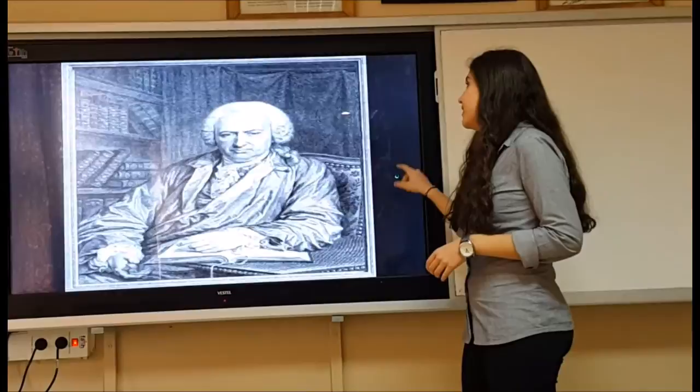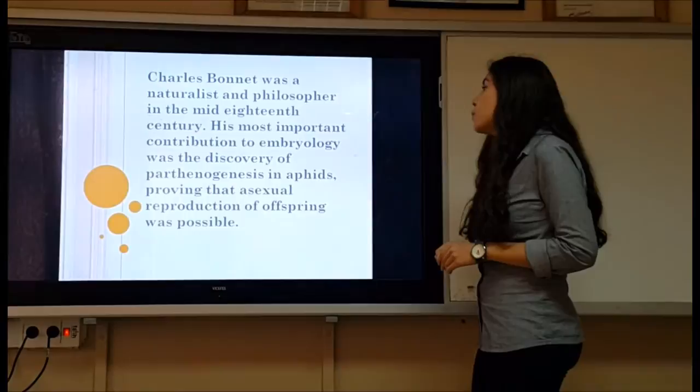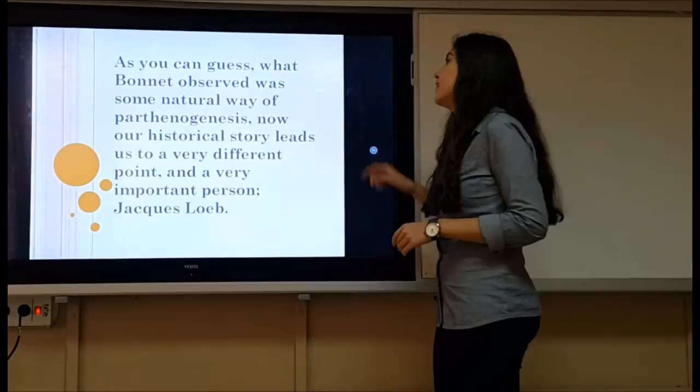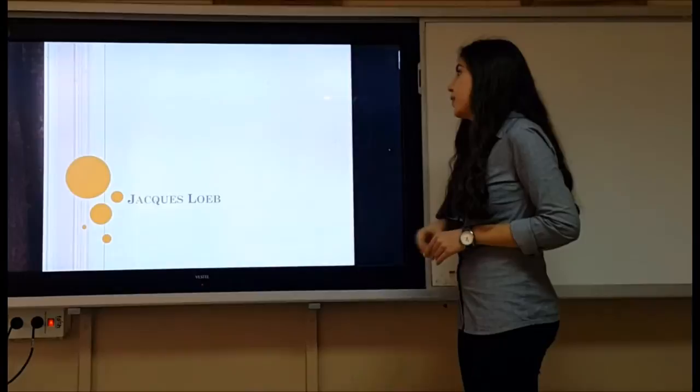Charles Bonnet was a naturalist and philosopher in the mid-18th century. His most important contribution to embryology was the discovery of parthenogenesis in aphids, proving that asexual reproduction was a possible form of life. What Bonnet observed was a natural form of parthenogenesis.